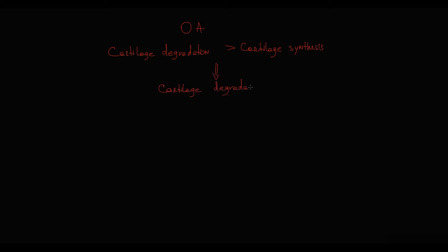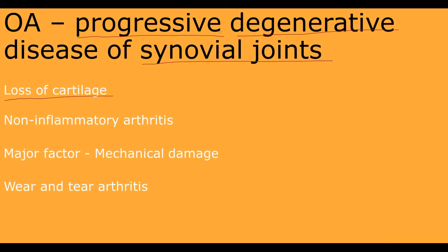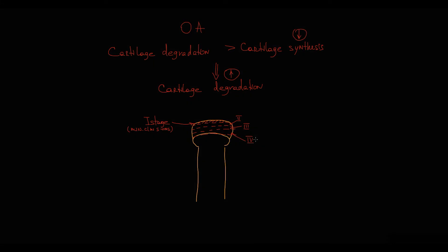The higher cartilage degradation becomes and the lower cartilage synthesis becomes, the faster osteoarthritis progresses. 'Progressive' means that initially, on the first stage of osteoarthritis, there is only minimal loss of cartilage causing minimal clinical symptoms, but over time damage accumulates and osteoarthritis progresses to the second, third, and finally the fourth stage.